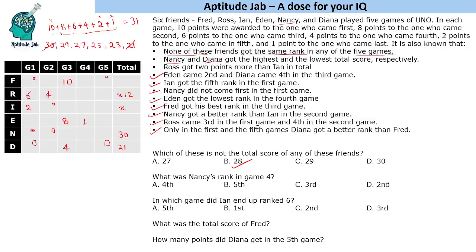This puzzle works like a Sudoku, but it's six by five, so one number is missing per row. Looking at Ross, he already has 6 and 4 points. Ross cannot be missing the 2-pointer if that leads to a contradiction. Since Ross must score two more than Ian, and 23 would require Ian to be 21 — which is Dinah's total — Ross must be 29 and Ian must be 27.